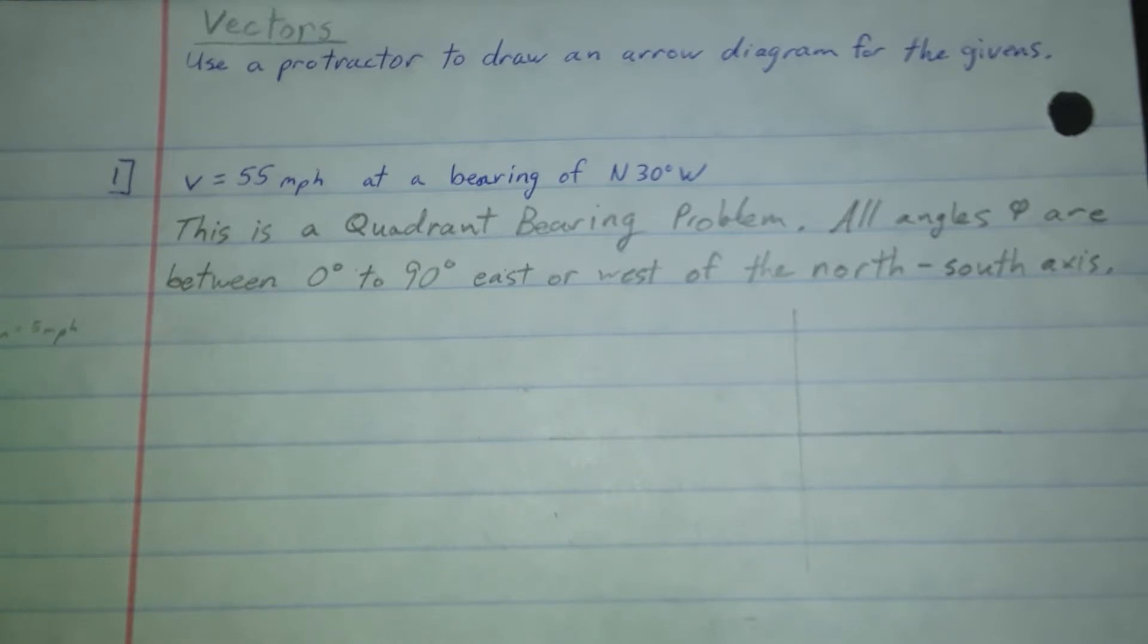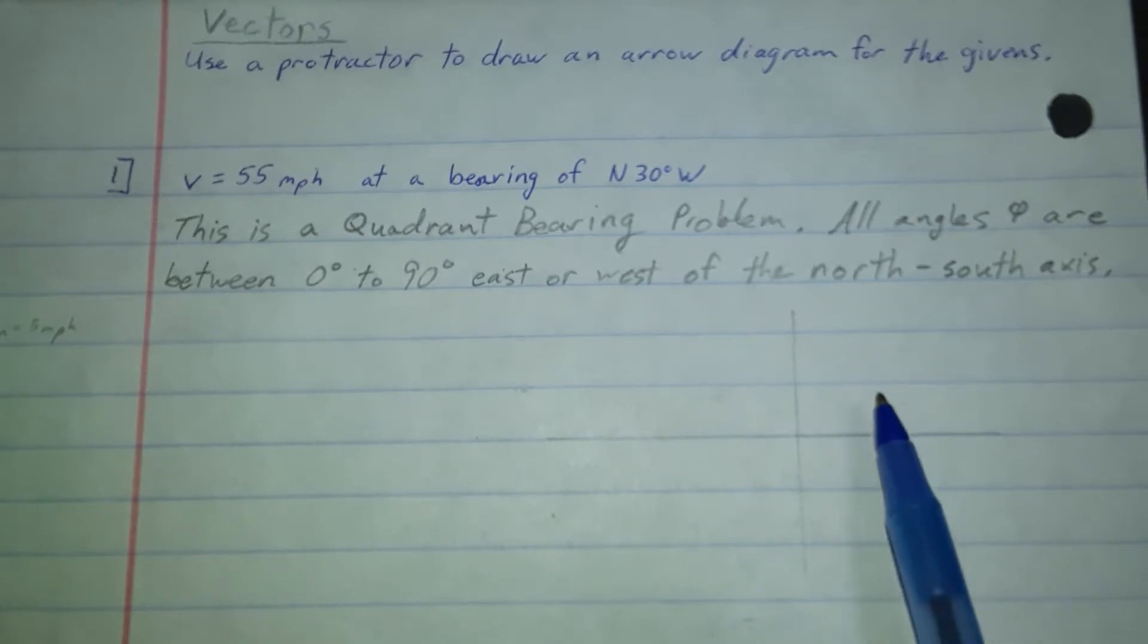We are going to look at a technique of graphing vectors using arrow diagrams. We're going to use something that is essentially an xy coordinate system without being an xy coordinate system.